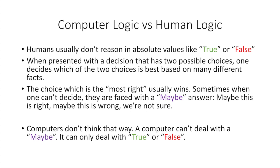Most likely what you're going to do is you're going to decide that one choice is more right than the other, and that the other choice is less right, and you'll pick the choice that is the more right choice to do. And every once in a while, you'll get into a situation where both choices seem equally good, and you're just going to go, maybe I should do this, maybe I should do that. This is human reasoning and logic, which is totally fine, but doesn't work for a computer.